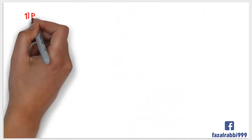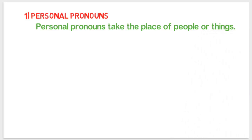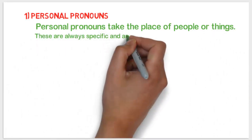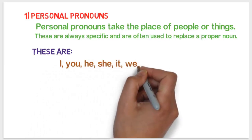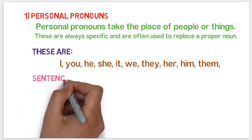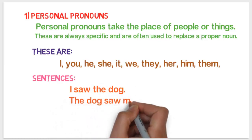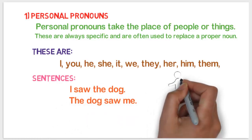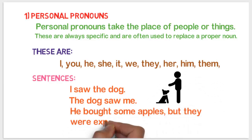Number one: personal pronouns. Personal pronouns take the place of people or things. These are always specific and are often used to replace a proper noun. These are: I, you, he, she, it, we, they, her, him, them. For example: 'I saw the dog,' where I is a personal pronoun. 'The dog saw me,' where me is a personal pronoun. 'He bought some apples, but they were expensive' — here the personal pronouns are he and they.